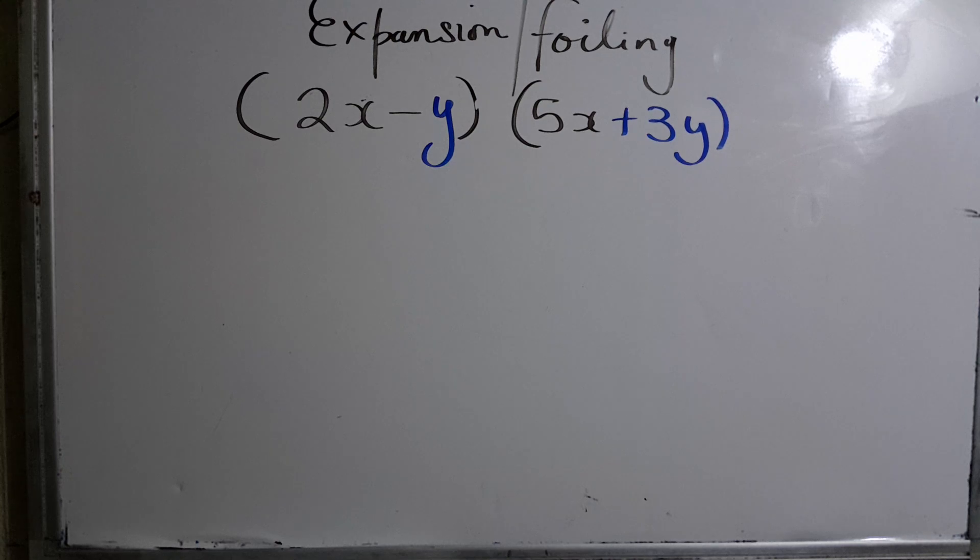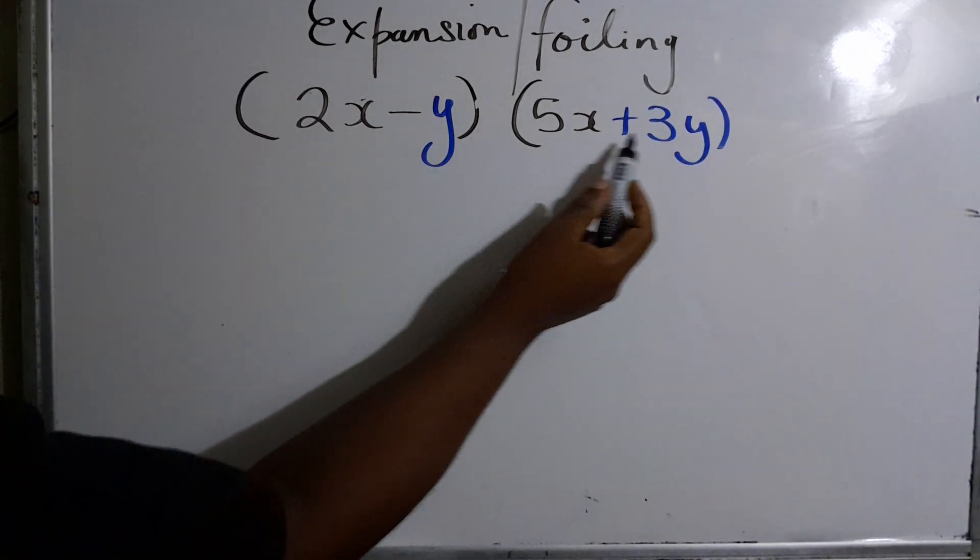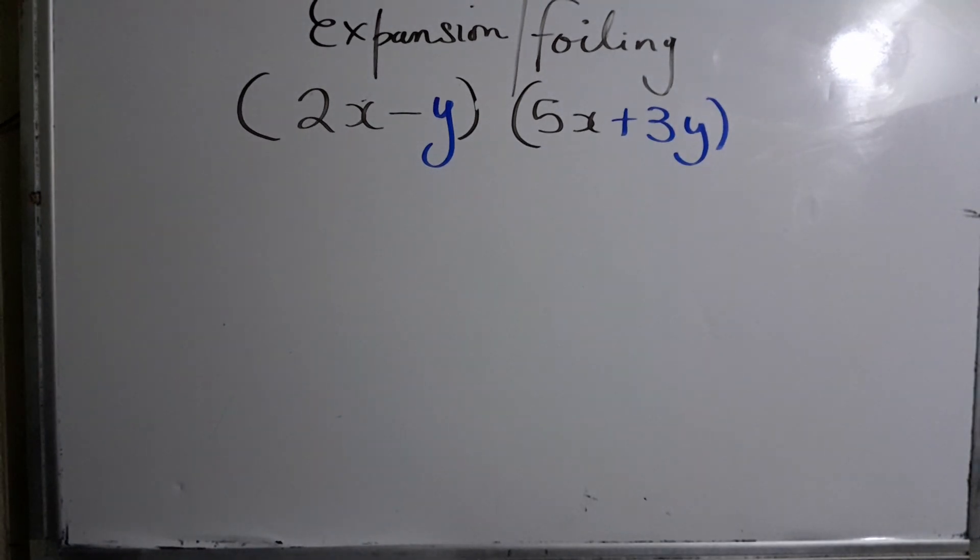I color code it so everyone can fully understand. Let's go. So we have (2x-y)(5x+3y) and we are to expand. The bracket means expand.